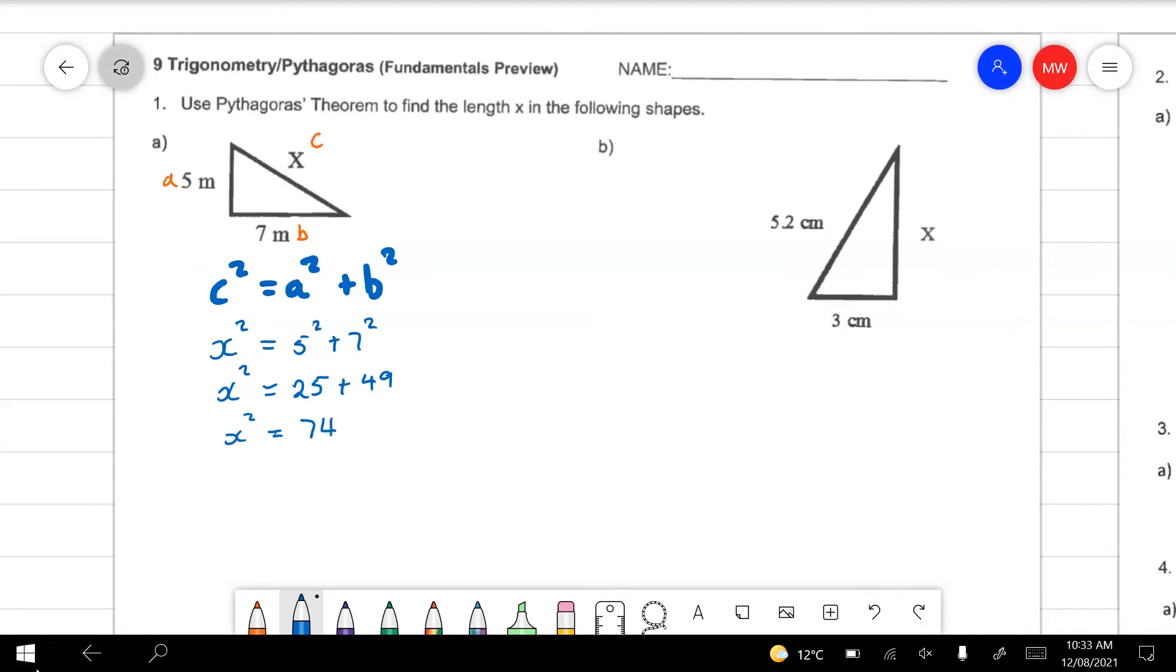So X squared will be 74 and then if we use the balance method what we're going to do is square root both sides that will get rid of this little squared here and what we'll be left with is X equals 8.6. Now just quickly checking this question this one had units don't throw away cheap units this one is in meters so you have to answer it in meters.